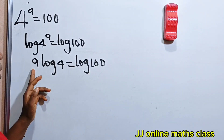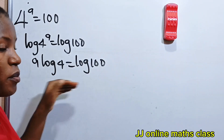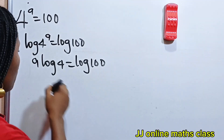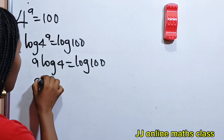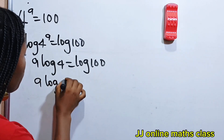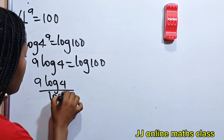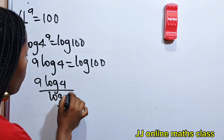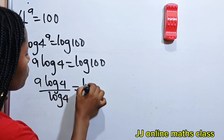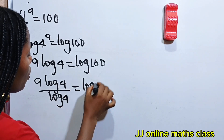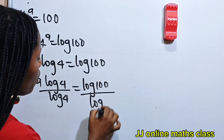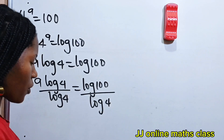Now we are looking for A, so let's divide both sides of this equation by log 4. So we have A multiplied by log 4 divided by log 4 is equal to log 100 divided by log 4.